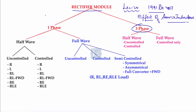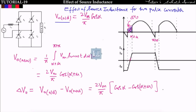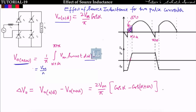Before proceeding, I want to correct something from lecture number 19, where I derived the effect of source inductance for the two-pulse converter. We found that the average voltage decreases. I derived V_naught_nu as equal to (1/π) times the integral from α+μ to π+α of Vm·sin(ωt) d(ωt). When you integrate this, you get V_naught_nu = (Vm/π) · [−cos(π+α) + cos(α+μ)]. Since cos(π+α) = −cos(α), this becomes V_naught_nu = (Vm/π) · [cos(α) + cos(α+μ)]. Please edit this in your notes — what I wrote in lecture 19 was wrong.